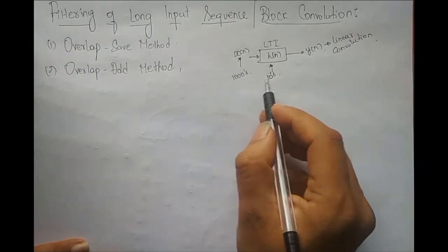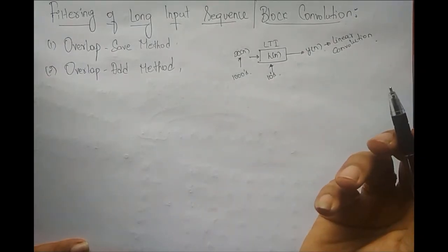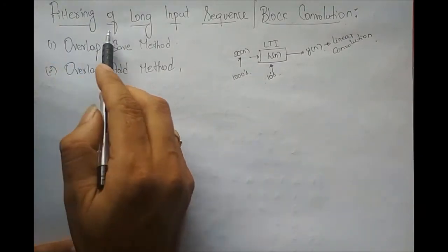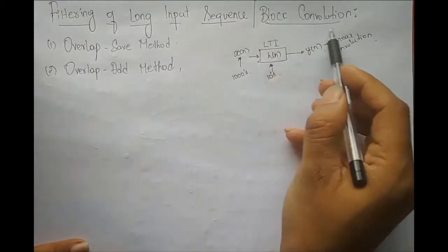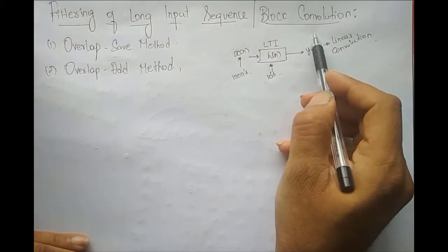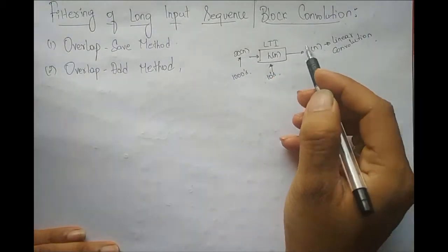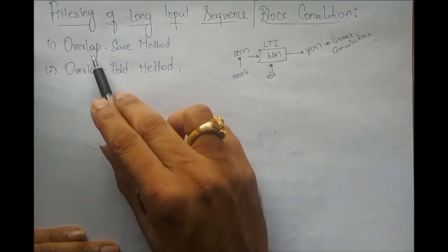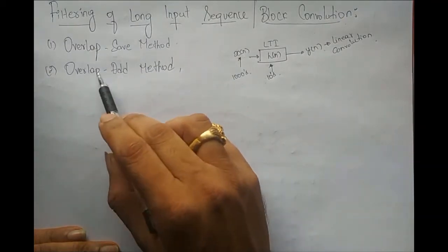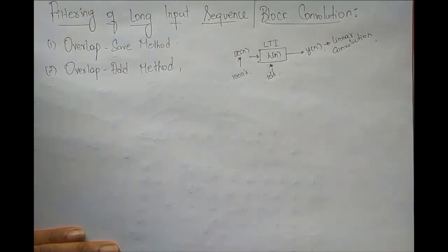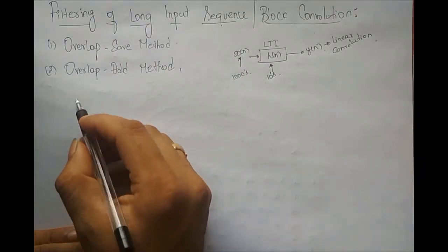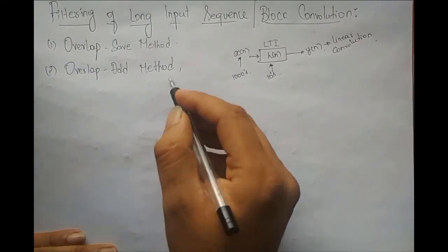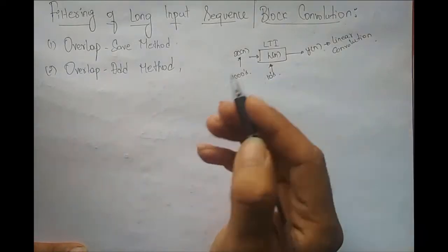Given this case, how do we filter it? That is what we are going to discuss: filtering of long input sequences, which we also call block convolution. In order to perform the filtering of a long input sequence, we have two methods: one is the overlap-and-save method, and the other one is the overlap-and-add method. We will discuss the overlap-save method first, and in the next lecture, we will discuss the overlap-and-add method.